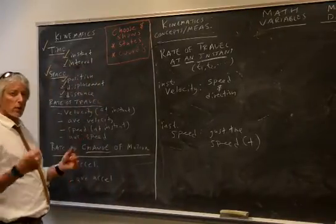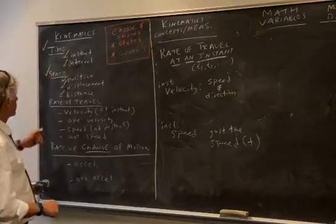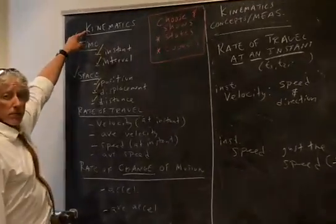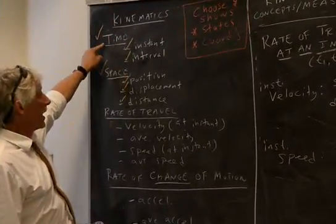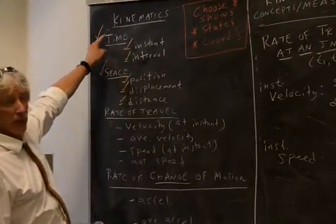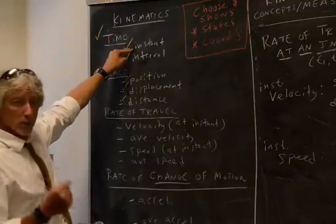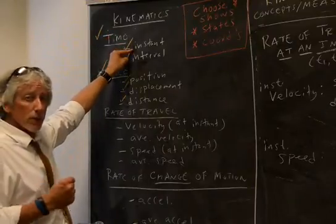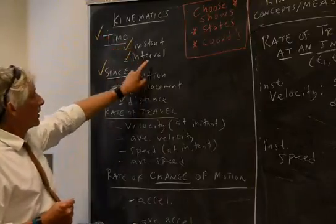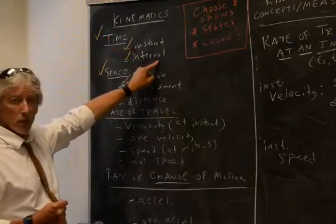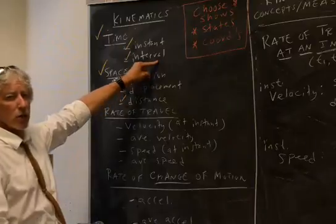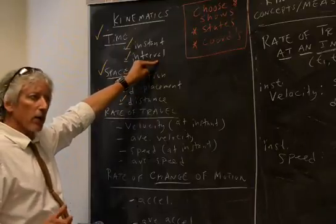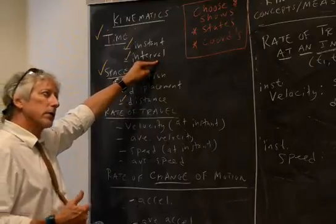We'll get into vector motion. But remember in kinematics, there's time — there's an instance, a moment, a 'now' — and there's an interval, or a duration, an elapsed time, from one now to another now.